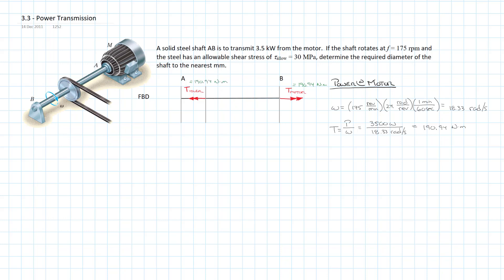Then we can look at the shear stress due to torsion. In this case, we know our formula for tau max is the torque, that's the internal torque, which in this case is 190.94 newton meters, times the radius of the shaft divided by the polar moment of inertia of the shaft. The polar moment of inertia for a shaft is equal to π/2 times its radius to the fourth.